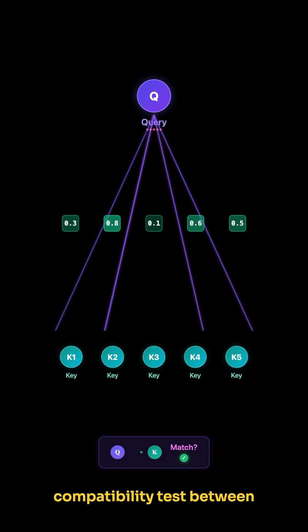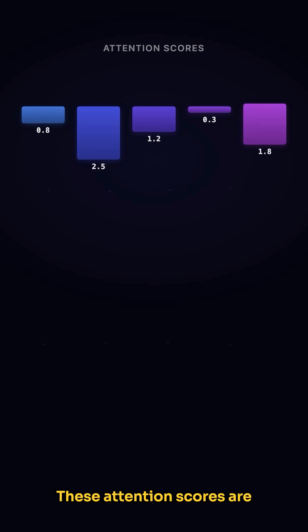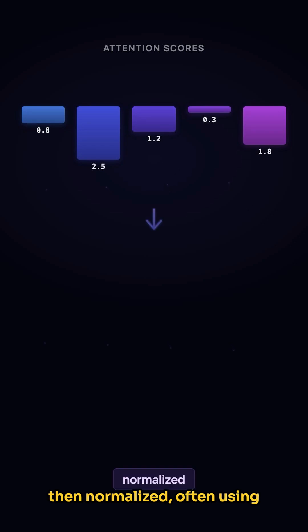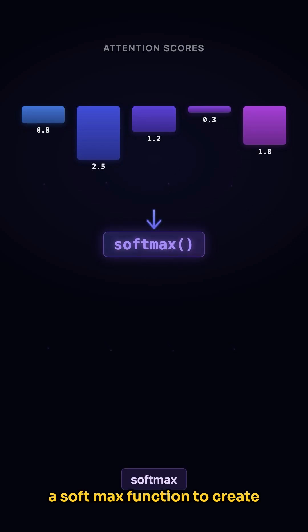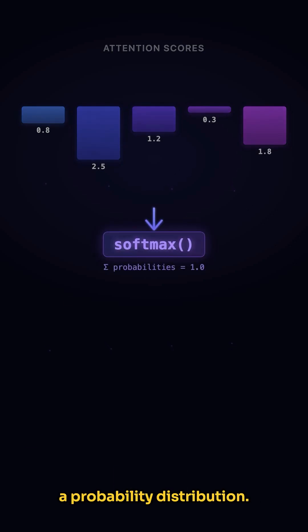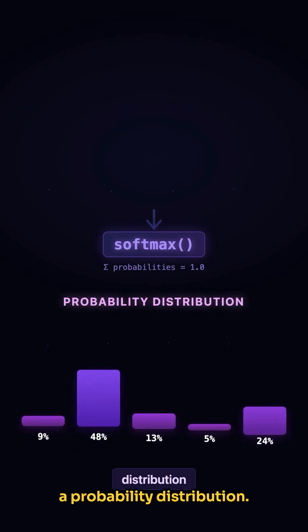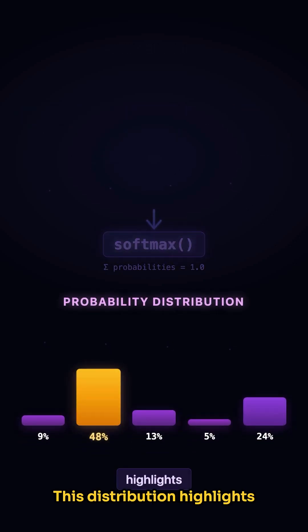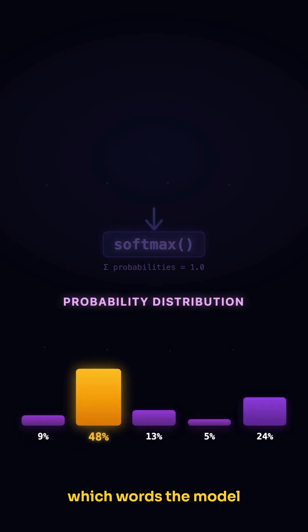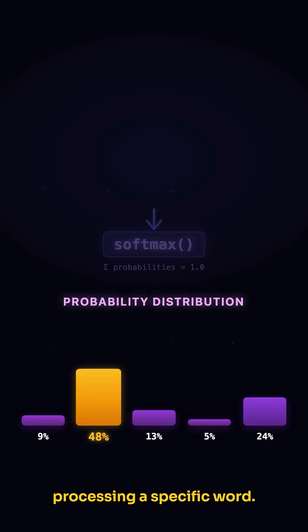Think of it as a compatibility test between each pair of words. These attention scores are then normalized, often using a softmax function, to create a probability distribution. This distribution highlights which words the model should attend to most when processing a specific word.